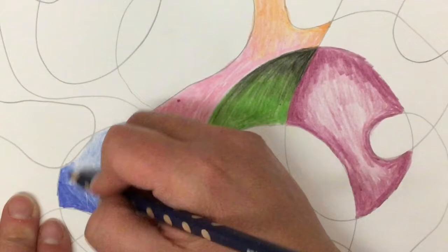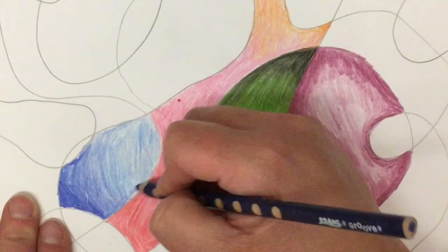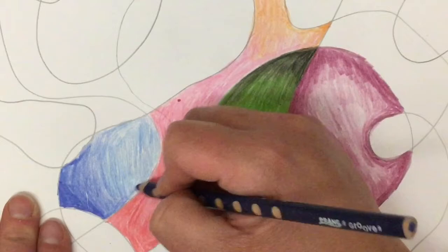So giving all these different values to our picture are going to really add a lot of interest. Instead of just coloring it in like a color sheet, we're really adding a lot of interest to our picture.